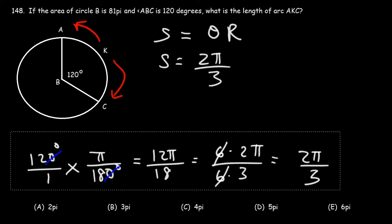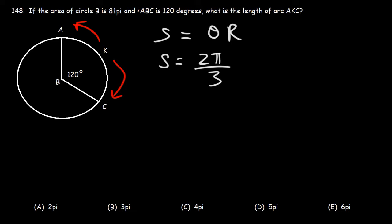Now, what we're missing at this point is the radius of the circle. How can we calculate that? The answer has to do with area. That is, the area of a circle is pi r squared.